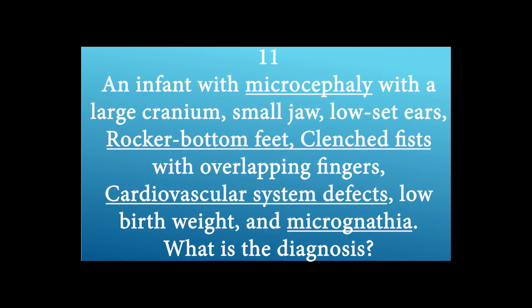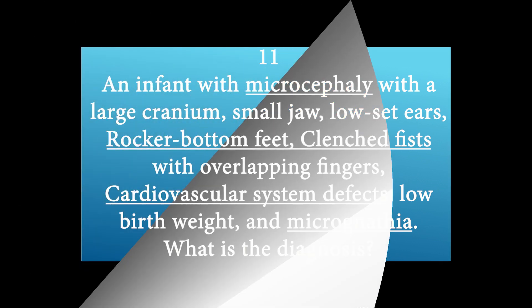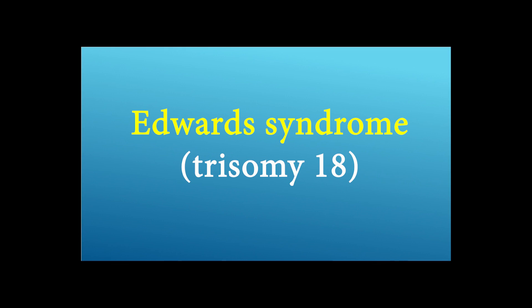An infant with microcephaly with a large cranium, small jaw, low-set ears, rocker bottom feet, clenched fists with overlapping fingers, cardiovascular system defects, low birth weight, and micrognathia. What is the diagnosis? The answer is Edwards syndrome, trisomy 18.